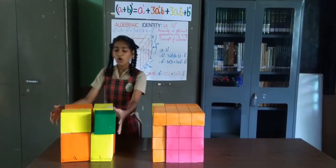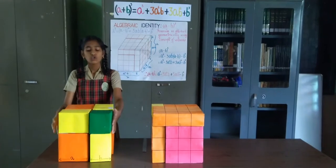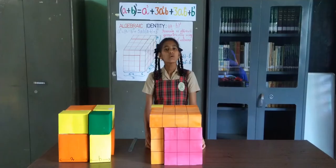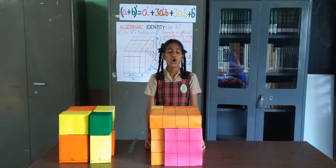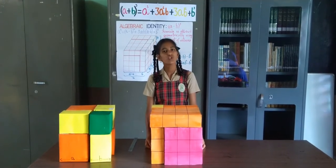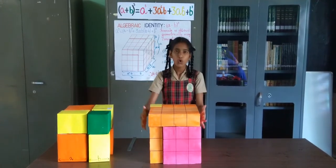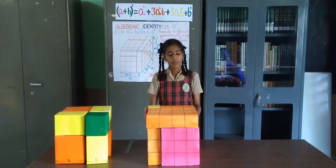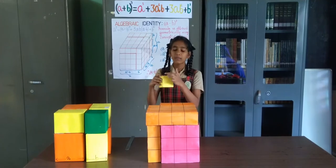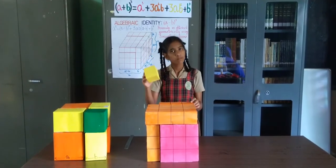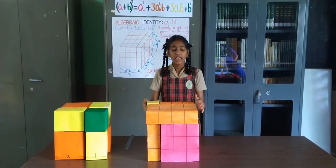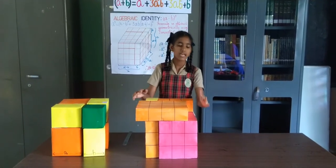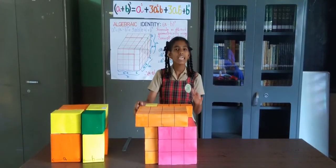This model can also be used as a puzzle to make the model of a cube using its cubes and cuboids. To understand the algebraic expansion of A minus B the whole cube geometrically, consider this small cube of side A units, so its volume is A cube. This small cube of side B units, so its volume is B cube.